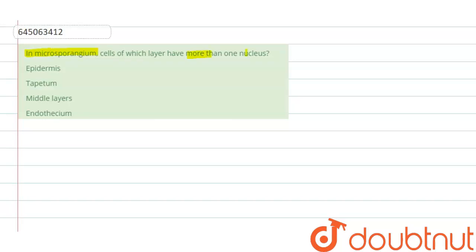The options given for this question are Epidermis, Tapetum, Middle layers and Endothecium. All of these four options are the wall layers of the microsporangium itself.